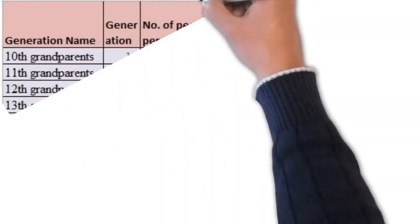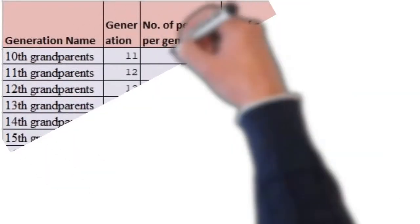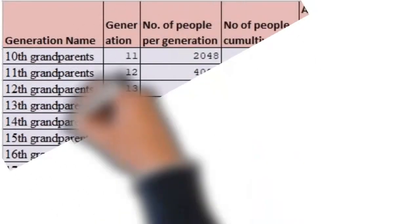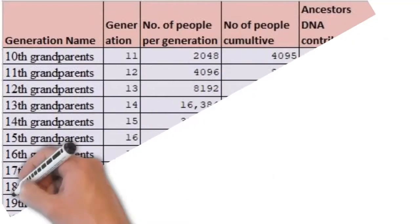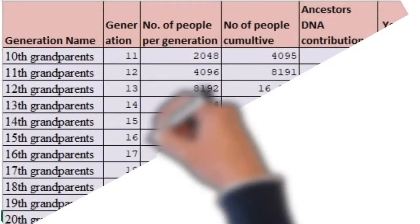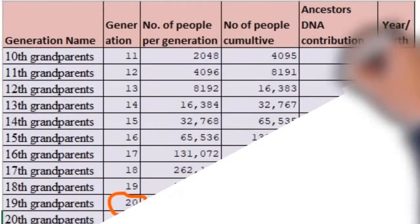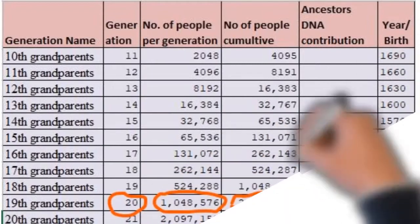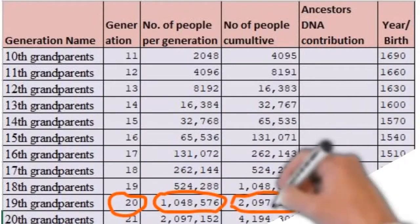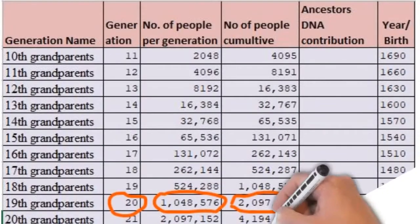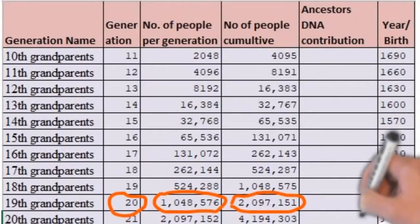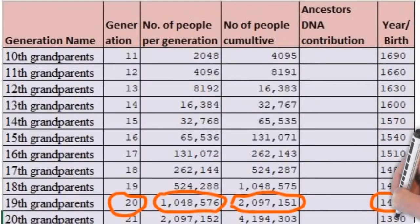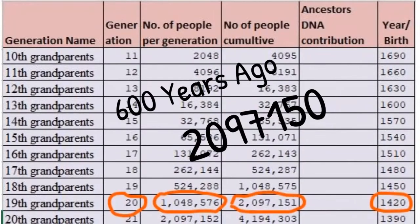If we go on further to 20 generations, around 600 years ago, we will have 1,048,576 ancestors. If we combine all the ancestors from our parents to 20th-generation ancestors together, we would have 2,097,150 ancestors in total.